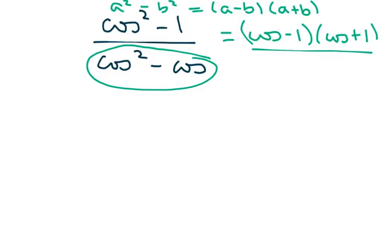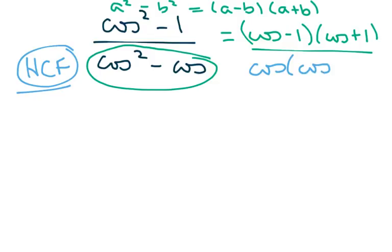Now, in the denominator, I'm going to just use greatest common factor or highest common factor. In IB, they tend to use the highest common factor terminology. So I'm going to factor out a cosine, and I'm going to get cos(cos-1). And you notice here that these two can cancel. So my final answer is (cos+1)/cos.